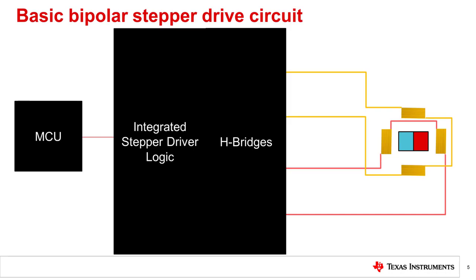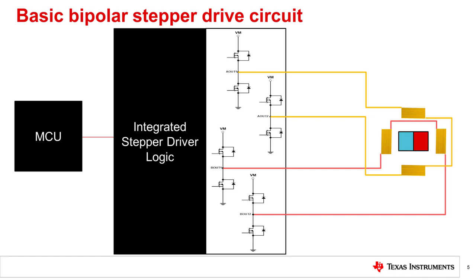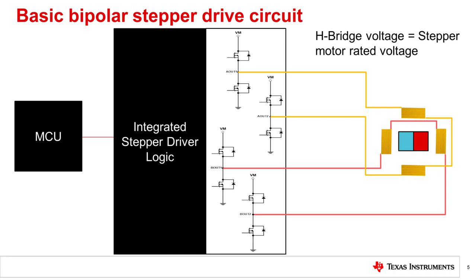The internal H-bridges of the stepper are now visible to clearly show the operation. Stepper motors can be driven using voltage or current. Voltage control is the simplest method to drive a stepper motor. The voltage of the H-bridge is set to the rated stepper motor voltage. The current is limited by the resistance of the motor and does not exceed the rated value. The speed of the stepper motor is limited because the current change is limited.